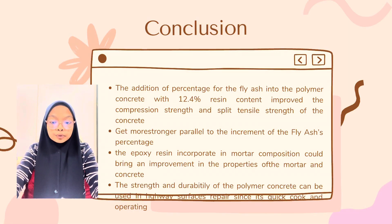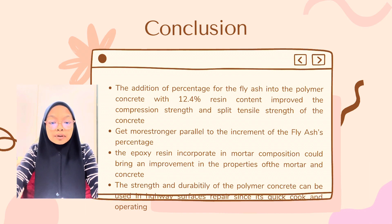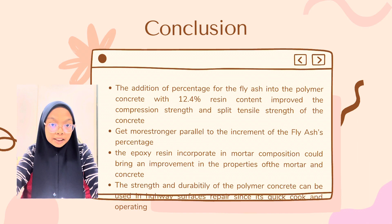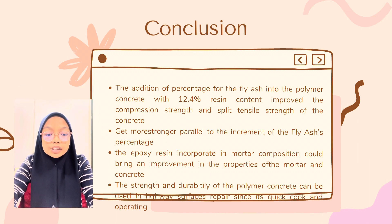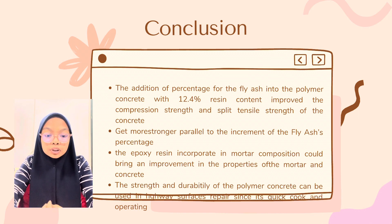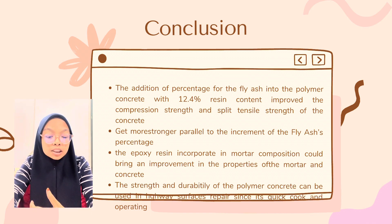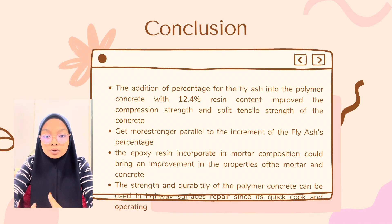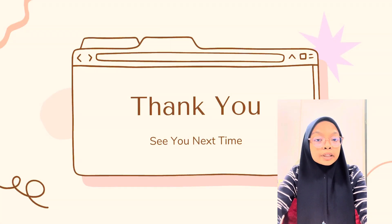From the case study, we can conclude that polymer concrete with 12.4% of epoxy resin and fly ash shows greater results than without fly ash. The addition of fly ash into the polymer concrete with 12.4% resin content improves the compressive strength and split tensile strength, becoming stronger parallel to the increment of fly ash percentage. The epoxy resin incorporated in the mortar composition brings improvement to the properties of the mortar and concrete. The strength and durability of polymer concrete make it suitable for highway surface repair since it is quick to cure and operate. That concludes my explanation about my case study on polymer concrete added with fly ash.